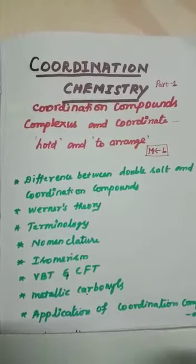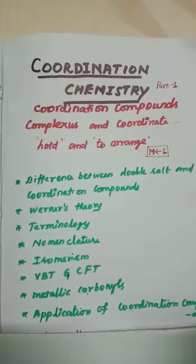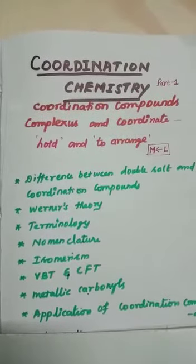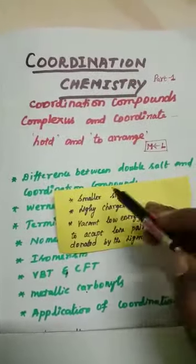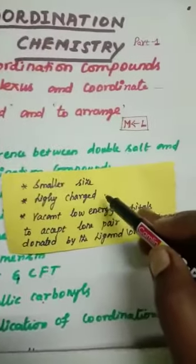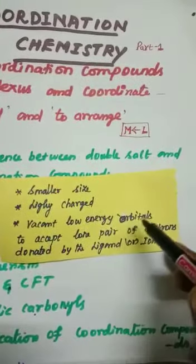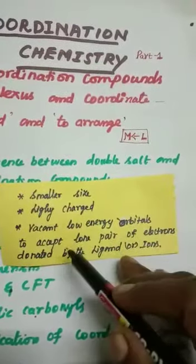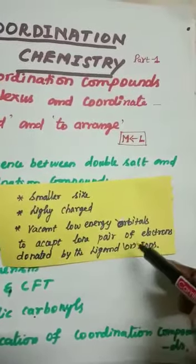Why do these D-block elements have the tendency to form complex ions? Because these elements are smaller in size, highly charged, and have vacant low energy orbitals to accept lone pair of electrons donated by the ligands or ions.